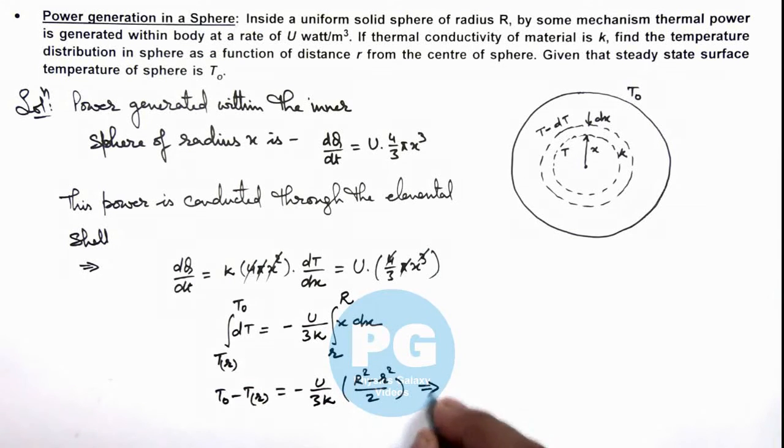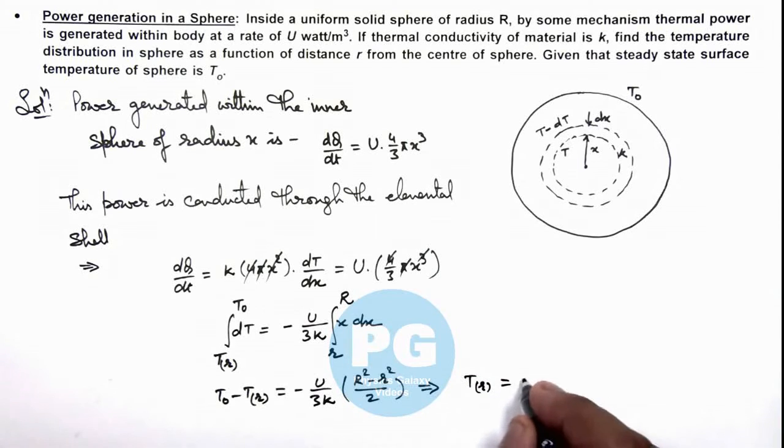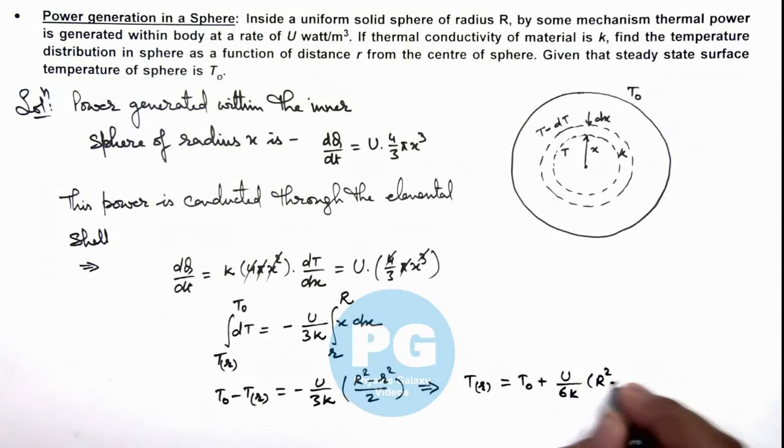Which on further simplifying, we get the value of temperature at a distance r which is T₀ plus U/6k multiplied by (R² - r²). That is the result of this problem.